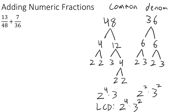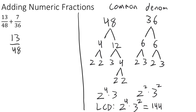Multiplying out 2 to the 4th times 3 squared gives us 144 — that's going to be our common denominator. Now let's finish the problem. We need to rewrite our fractions: 13 over 48 plus 7 over 36 with 144 as the denominator. We turn 48 into 144 by multiplying by 3, and we must also multiply the top by 3. Similarly, we turn 36 into 144 by multiplying by 4, and we must do the same to the top.